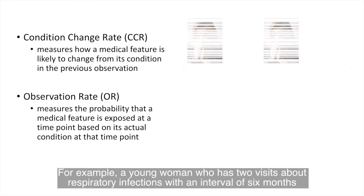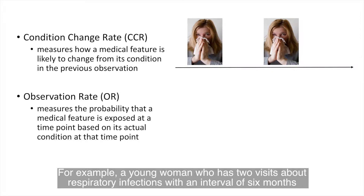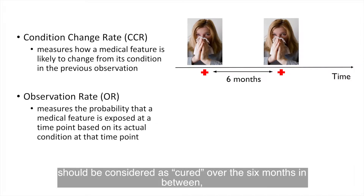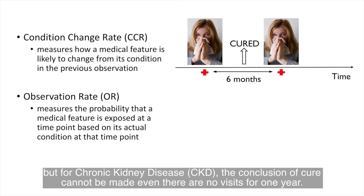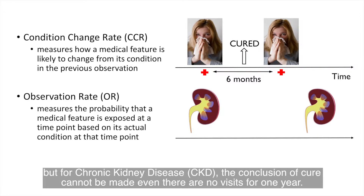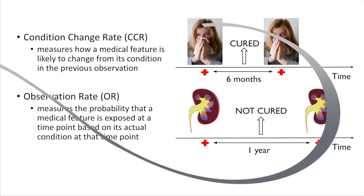For example, a young woman who has two visits about respiratory infections with an interval of six months should be considered as cured over the six months in between. But for chronic kidney disease, the conclusion of cure cannot be made even when there are no visits for one year.